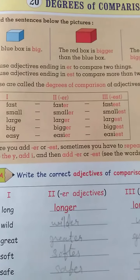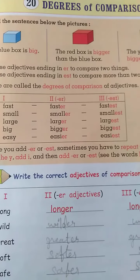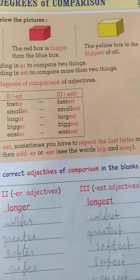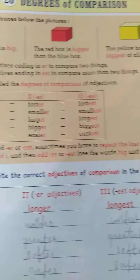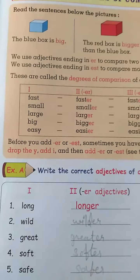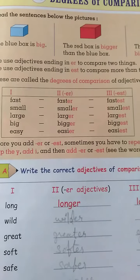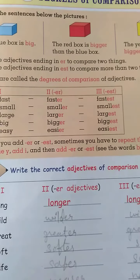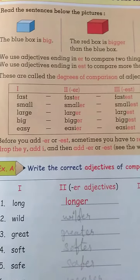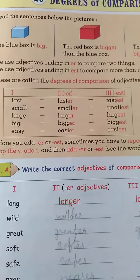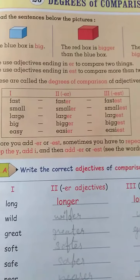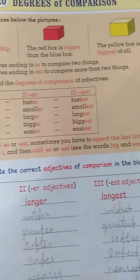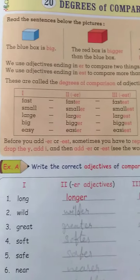Blue is big. Red box is bigger than blue box, and yellow is the biggest of all. We use adjectives ending in ER to compare two things. We use adjectives ending in EST to compare more than two things.